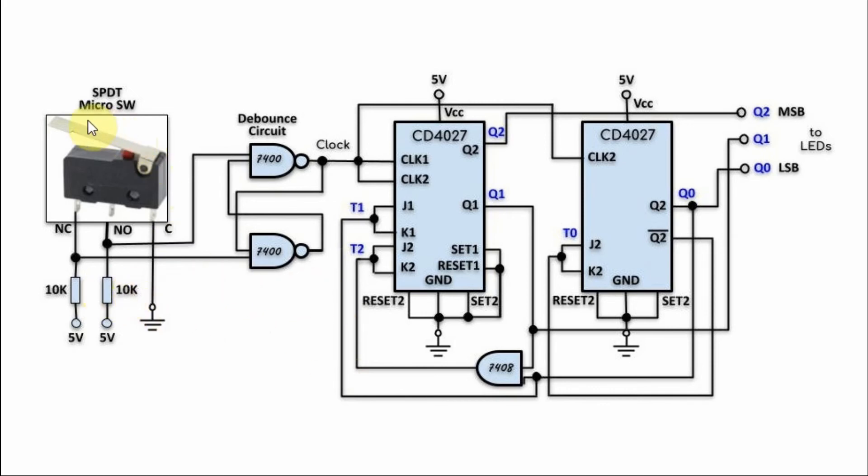To generate the clock, we use an SPDT micro switch coupled with a debounce circuit to manually generate pulses at the output. For the flip-flops, we use the CD4027, which contains two JK flip-flops. The 3-bit output is connected to LEDs to display the counts from 1 to 7.